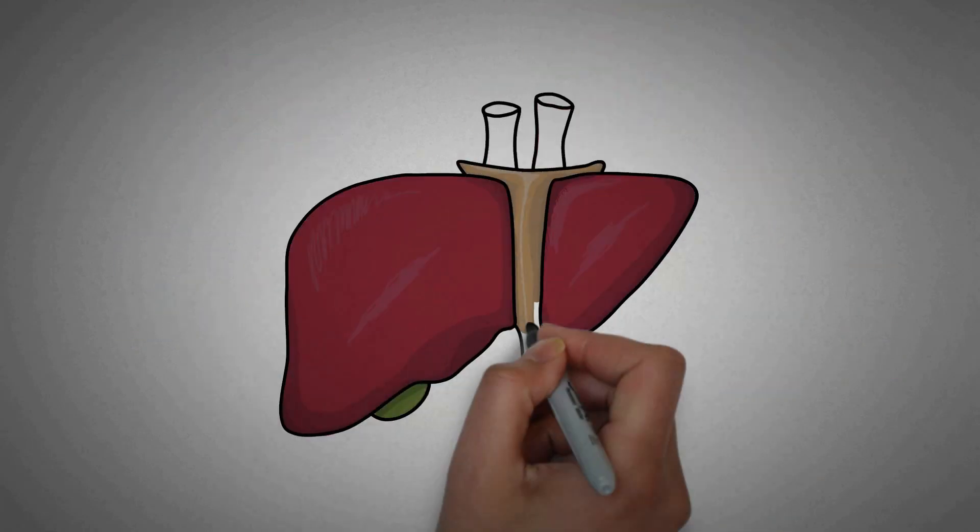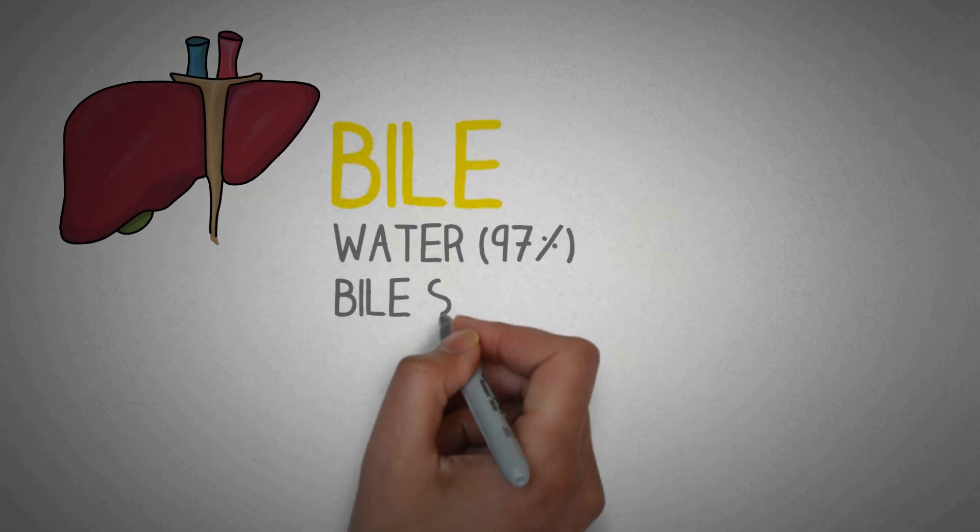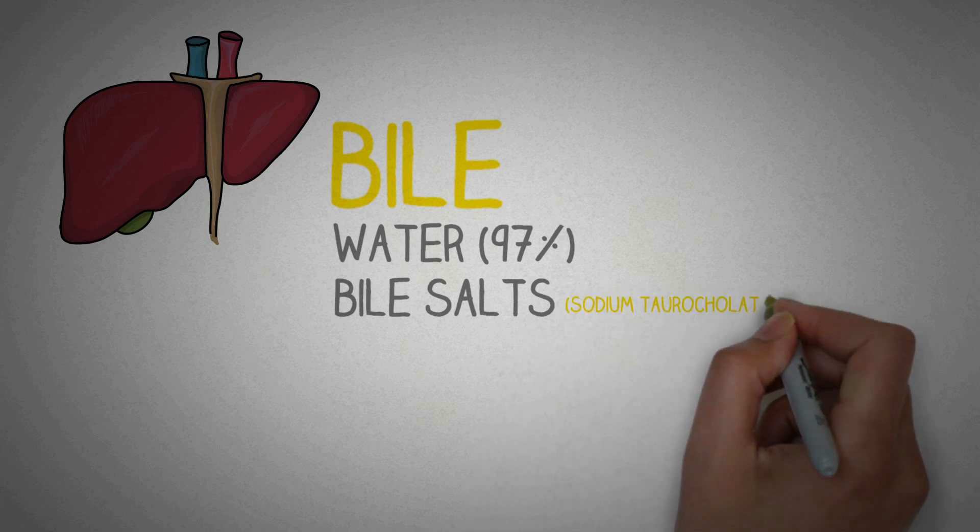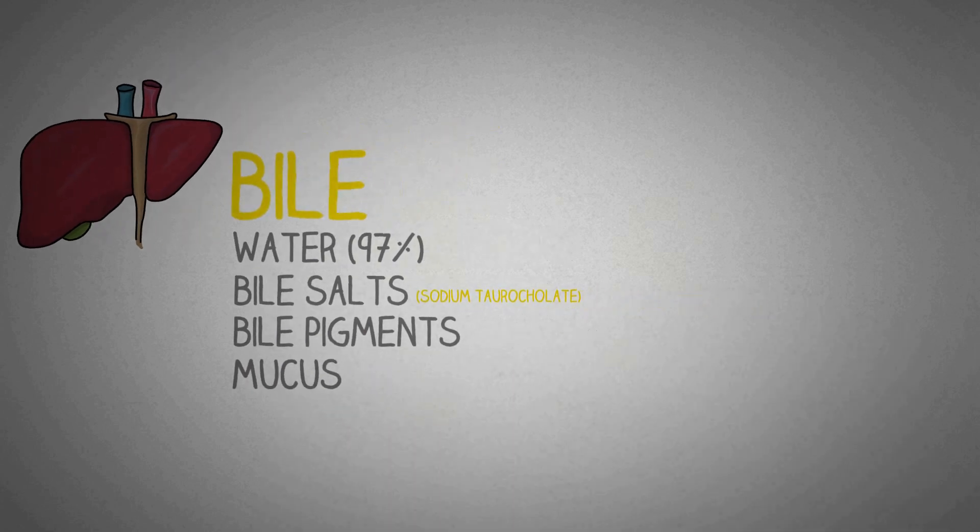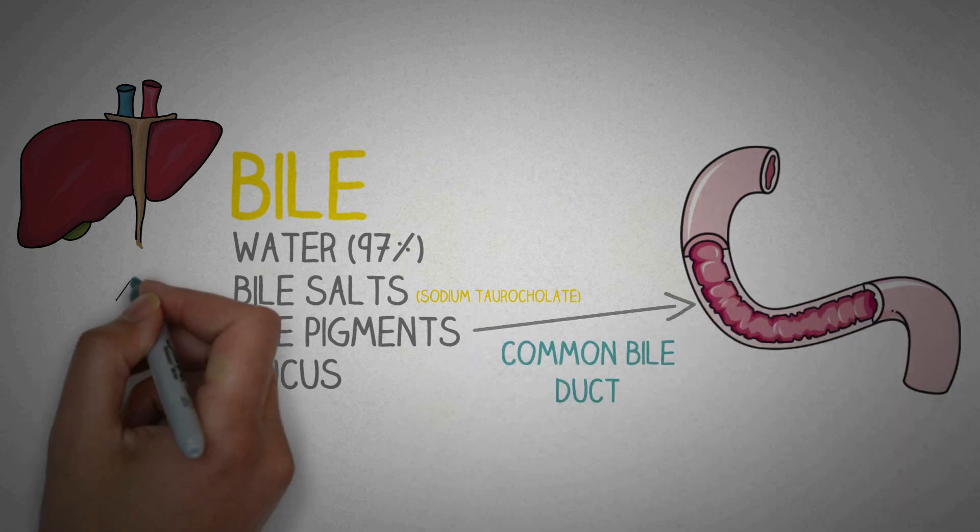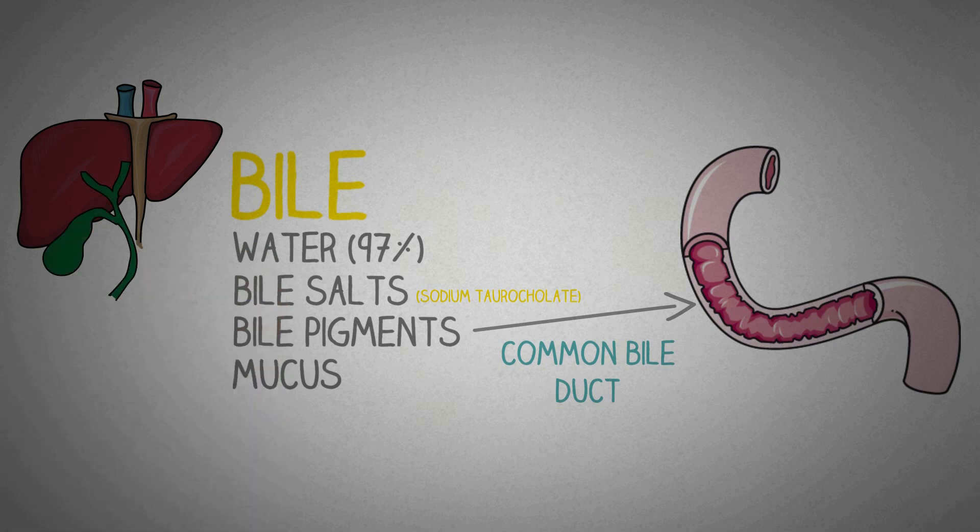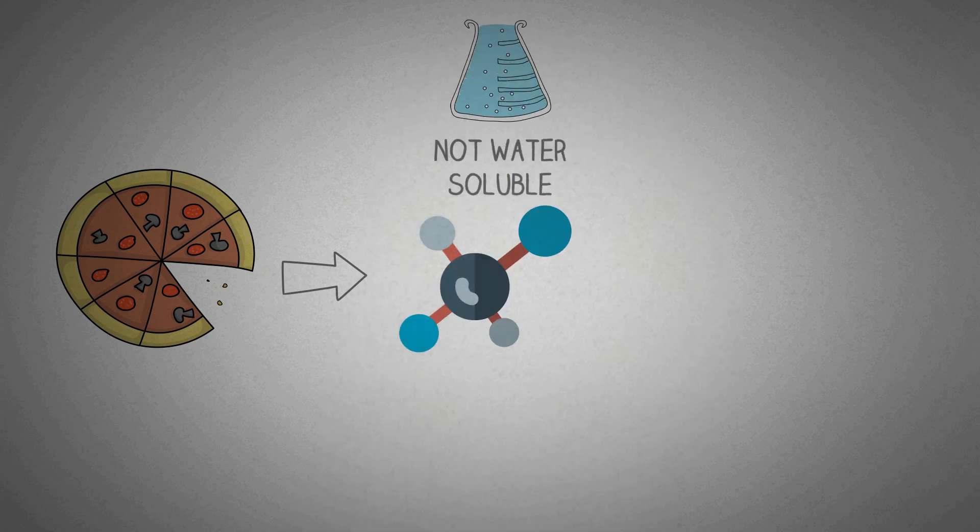The liver which is a vital organ of digestive system produces bile which consists of water, bile salts, bile pigments and mucus. These secretions are delivered to the duodenum via the common bile duct. The gallbladder is used to store bile and concentrate it. Since we eat a lot of fat in our diet which is not water-soluble and cannot be absorbed as such, bile helps to emulsify the fats in the chyme and leads to the formation of micelles which are easy to digest and absorb.